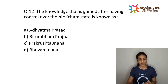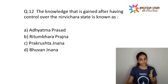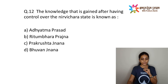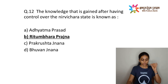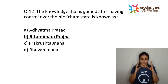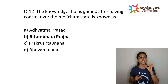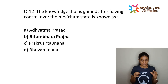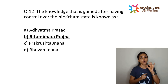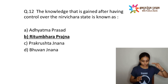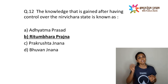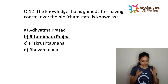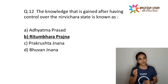The next question: the knowledge gained after having complete control over the Nirvachara state is known as — options are Adhyatma Prasad, Rutambara Prajna, Pratrushta Ganana, or Bhuvana Ganana. The answer is Rutambara Prajna, found in Sutra 48: Rutambara Taptra Prajna. The knowledge gained after complete control over Nirvachara is Rutambara Prajna — the one which gives knowledge of the truth. Rutambara means knowledge that holds only the truth, and Prajna means Prakrushta Ganana.